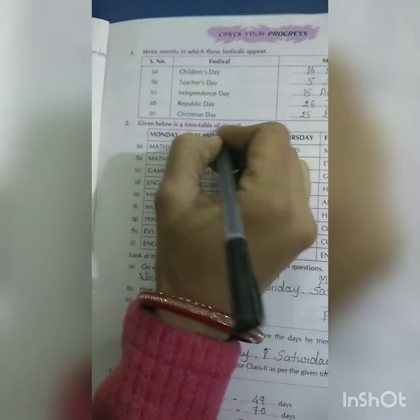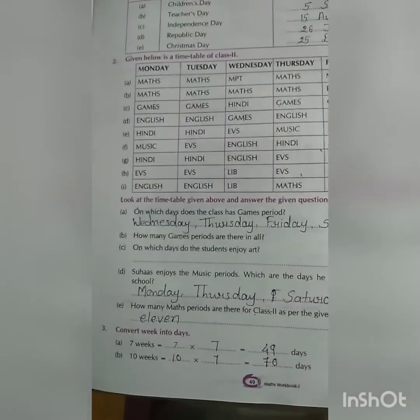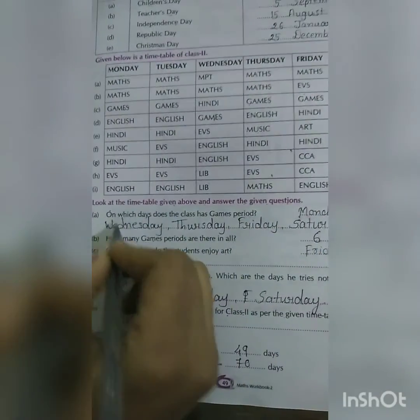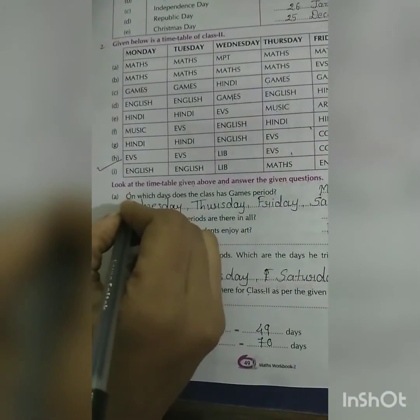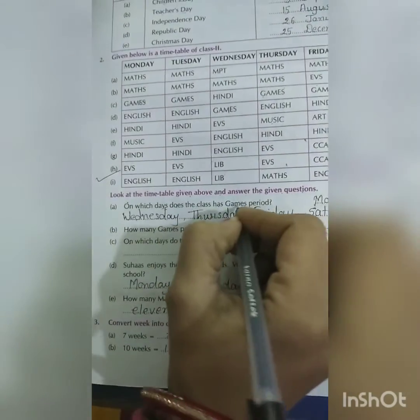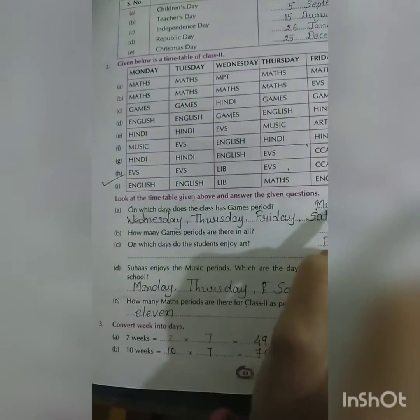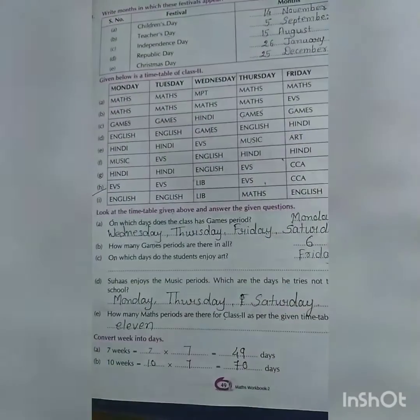Number 2: Given below is a timetable for class second. Look at the timetable and answer the questions. On which day does the class have games? Monday, Tuesday, Wednesday, Thursday, Friday, Saturday — all days.